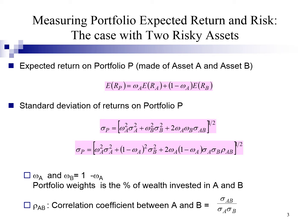ER stands for expected return, sigma is the standard deviation, and W represents rates of investment. The formula for covariance and correlation are also shown in the slide. I list out this formula as guidance, just in case you have forgotten. However, due to time constraint, I will not explain in detail. You can refer to my earlier videos if necessary.